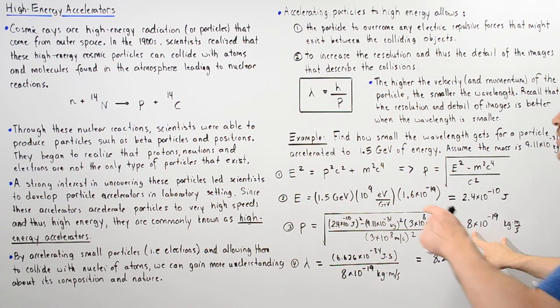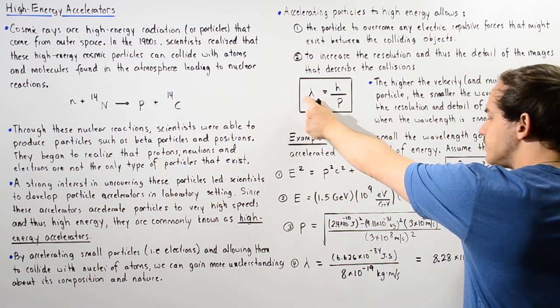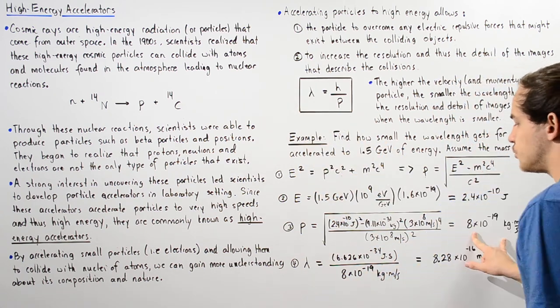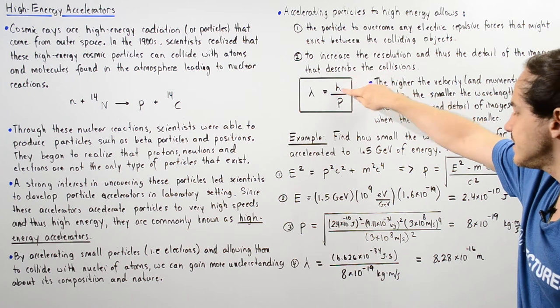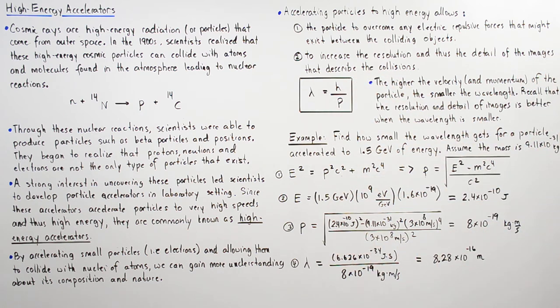Now we use this equation to solve for lambda. Lambda is equal to our Planck's constant, 6.626 times 10 to the negative 34 joules multiplied by seconds, divided by the momentum of 8 times 10 to the negative 19 kilograms meter per second. That gives us about 8.28 times 10 to the negative 16 meters.